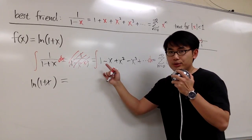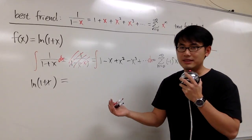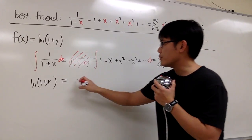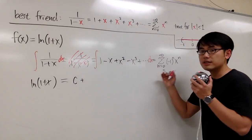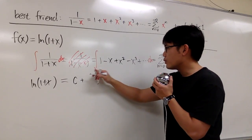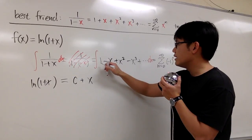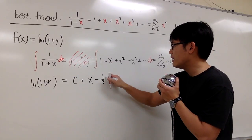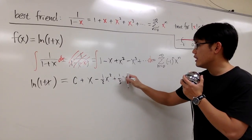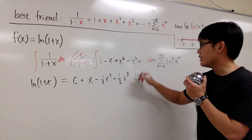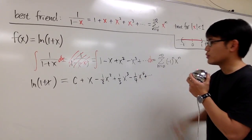Whenever we integrate there's a plus c, but for power series we put down c first, then the result. The integral of 1 is x, integrating negative x gives minus one-half x squared, integrating that gives plus one-third x to the third, integrating that gives minus one-fourth x to the fourth, and so on.